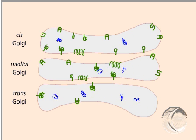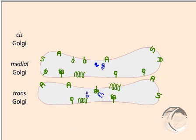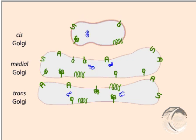In the cisternal maturation model, the cis Golgi matures to become the medial Golgi. A new cis Golgi is formed by fusion of ER vesicles.